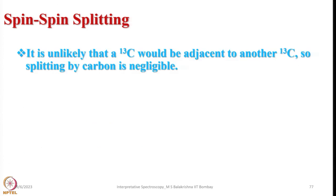Now let us look into spin-spin splitting in 13C NMR. It is unlikely that a 13C signal would be adjacent to another 13C, so carbon-carbon splitting is negligible unless enriched with the 13C isotope. The probability of two neighboring carbons both being 13C is extremely low — analogous to shaking two bottles of 100 marbles with 99 of one color and 1 of another and seeing how often the two rare-colored ones come together. As a result, we do not observe 13C–13C coupling in a normal unenriched molecule.